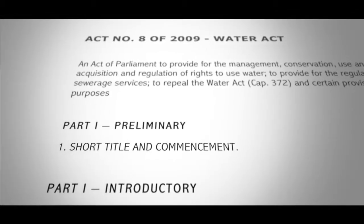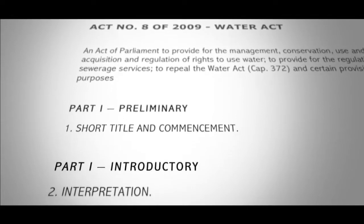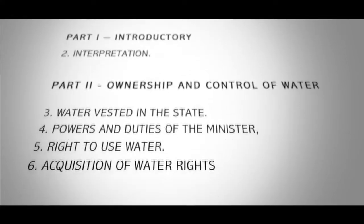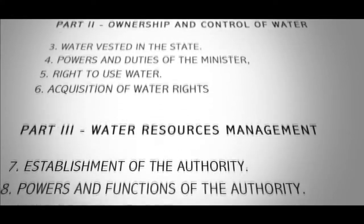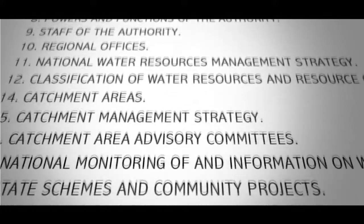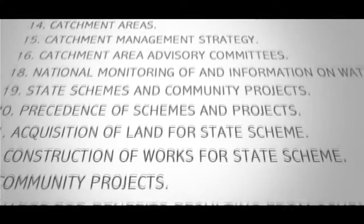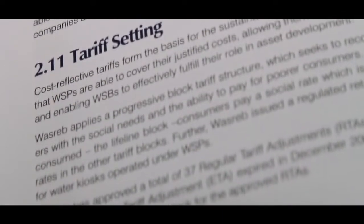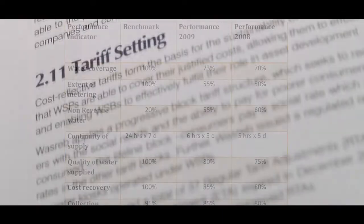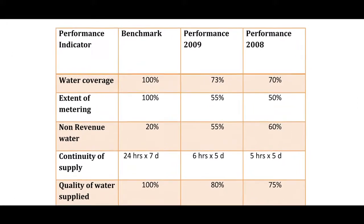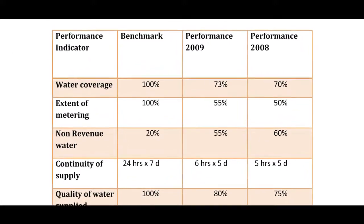Transparency looks at the existence of written procedures, because if these are unclear or absent, people can easily take advantage of the situation. Accountability assesses whether procedures are applied and monitored to enable actors to hold each other responsible.